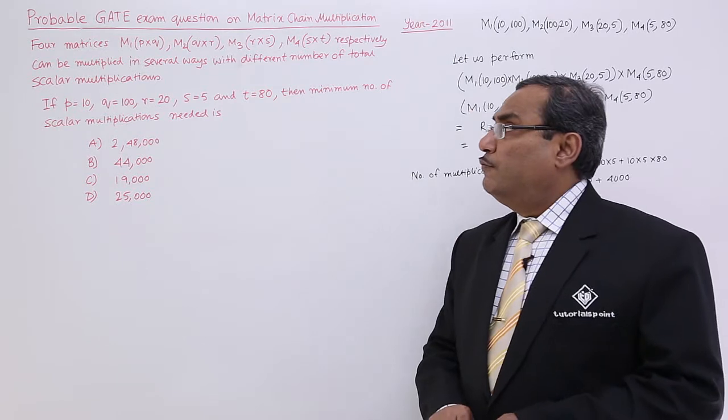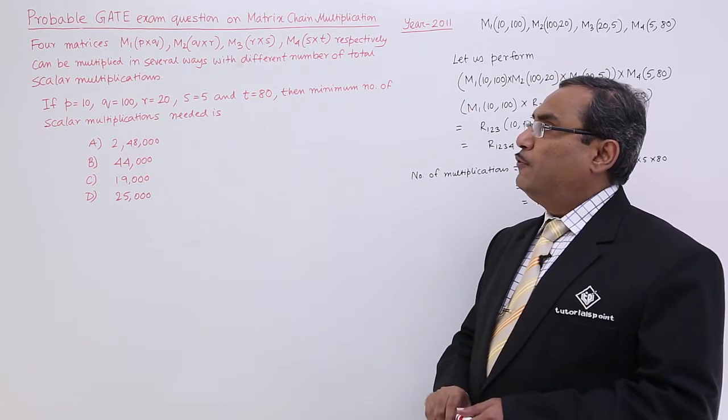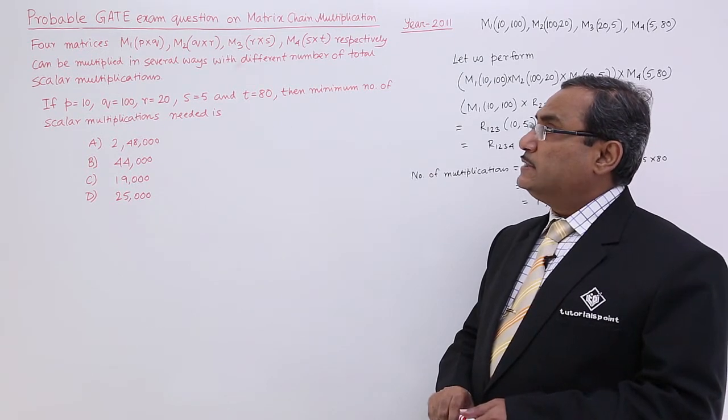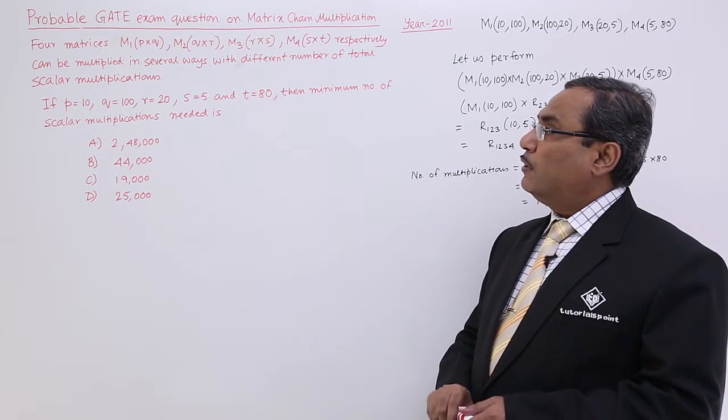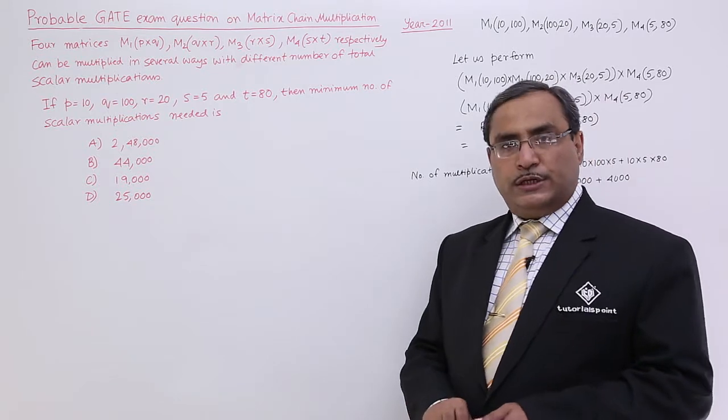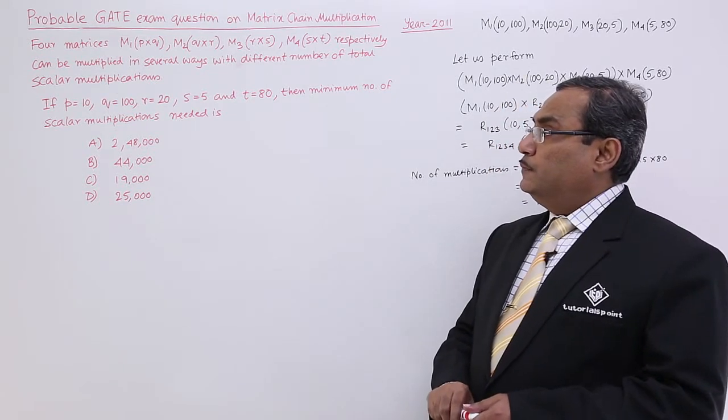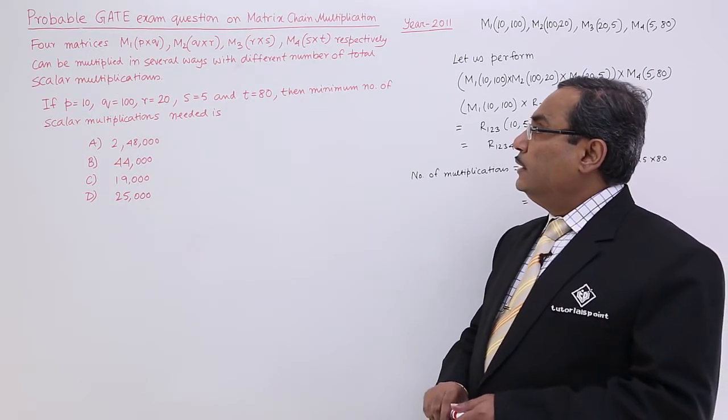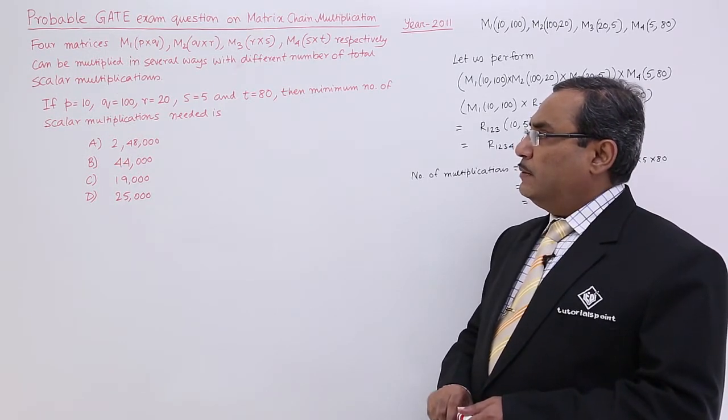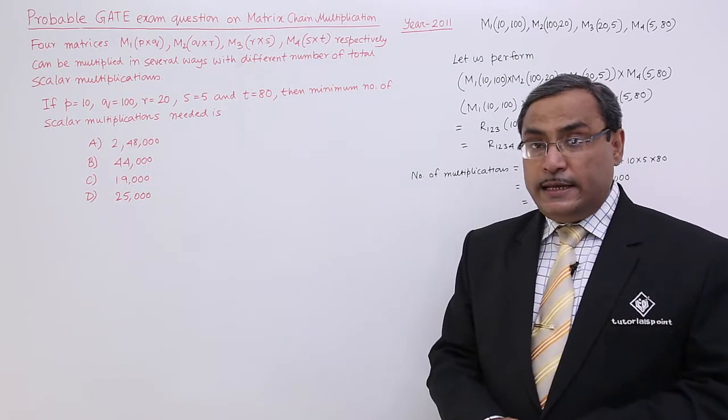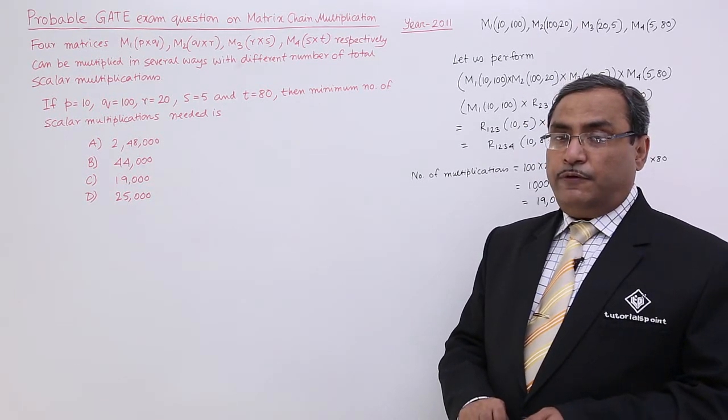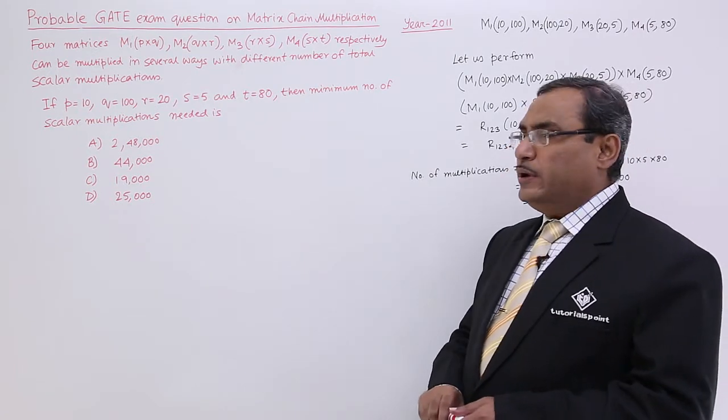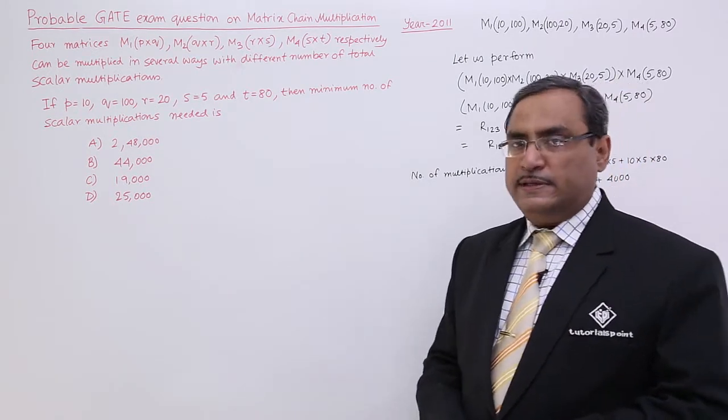Now see, 4 matrices M1, M2, M3, M4, the dimensions are given respectively. They can be multiplied in several ways with different number of total scalar multiplications. So, the respective dimension values are given P, Q, R, S, T. Then minimum number of scalar multiplications needed is. So, they are asking for the minimum number of multiplications we can do if you want to multiply all the 4 matrices.